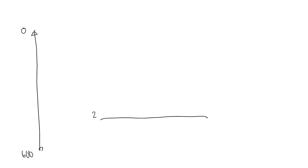For example, say this range represents the Y position of your mouse, from 0 at the top of the screen to 600 at the bottom. And this range here represents the radius of a circle, say from 20 to 340 pixels. Now we want to map the mouse position to the radius of the circle, so that when you move your mouse, the circle changes size.